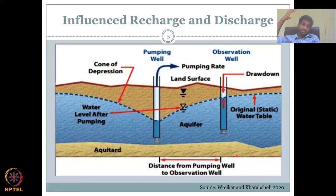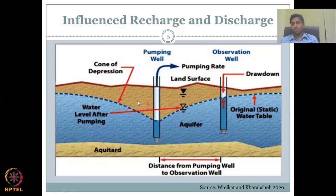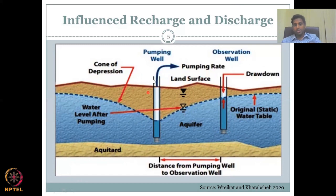Think about apartment buildings next to a single house — the apartment's large demand could pull water away from the neighbor's small well through the cone of depression. This is the important part about induced discharge. Similarly, induced recharge can occur: water would naturally move toward the low potential created by the cone of depression, so recharge from surrounding areas is drawn in more strongly because of the pumping.